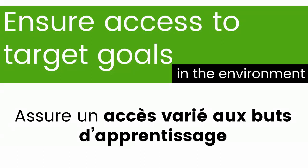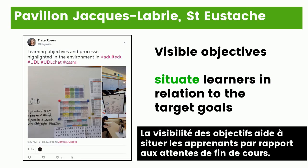One way to open up access to learning in our classrooms is to ensure that our students have access to their target goals in our classroom environment. We can simply post them on the walls around us, because we know that when students can see their objectives, it can help to situate them in relationship to them.